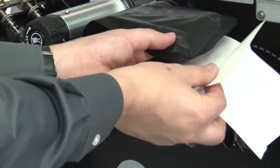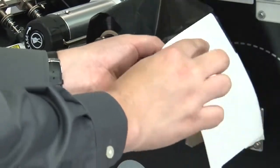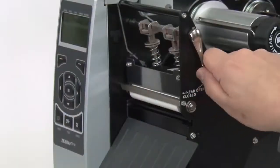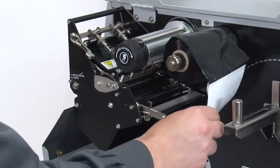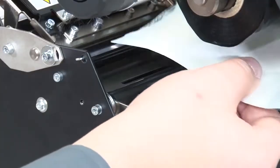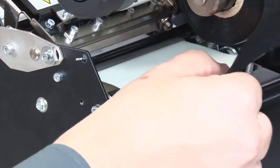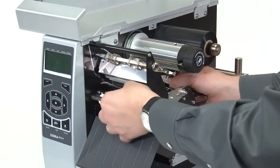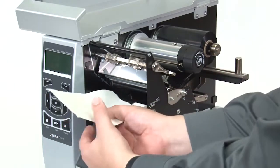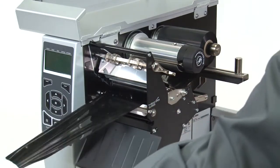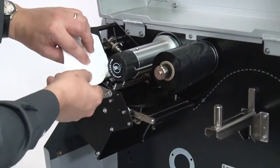Attach this label to the end of the ribbon to act as a leader. Open the printhead. Feed the ribbon leader under the ribbon roller and under the printhead. Bring the ribbon leader over the upper ribbon roller and then towards the ribbon take-up spindle.